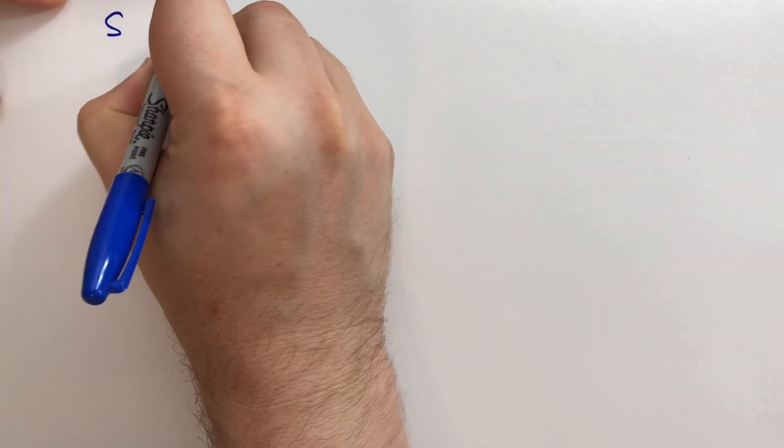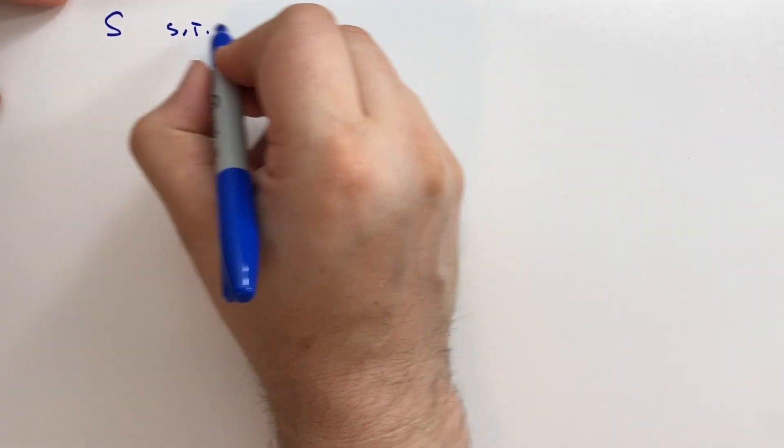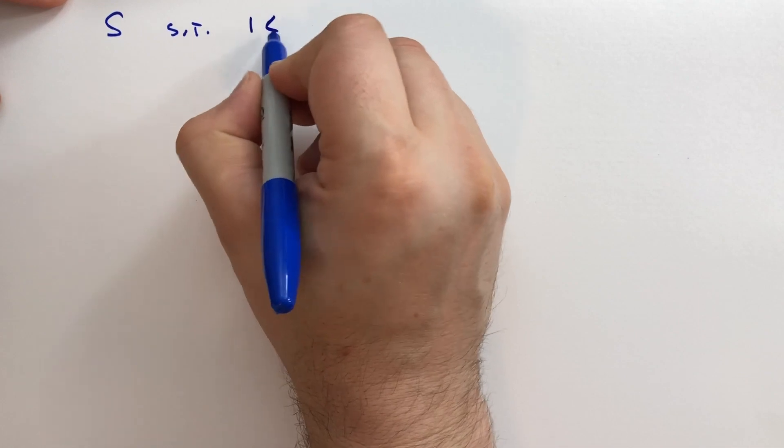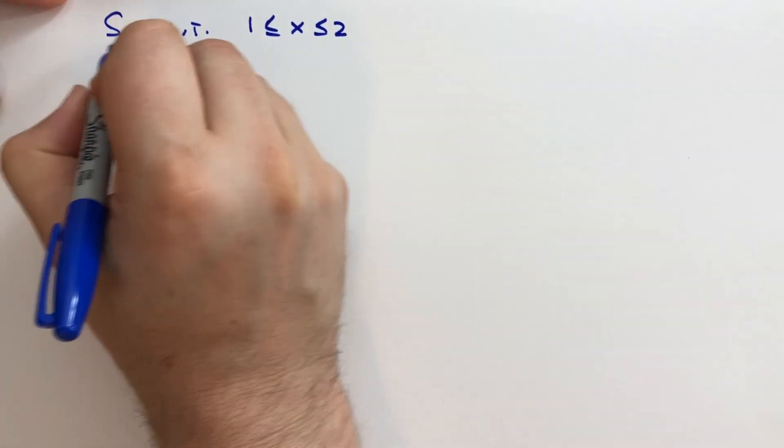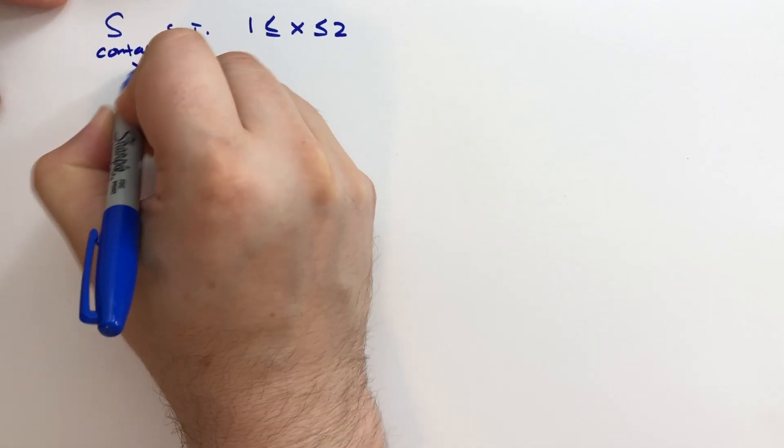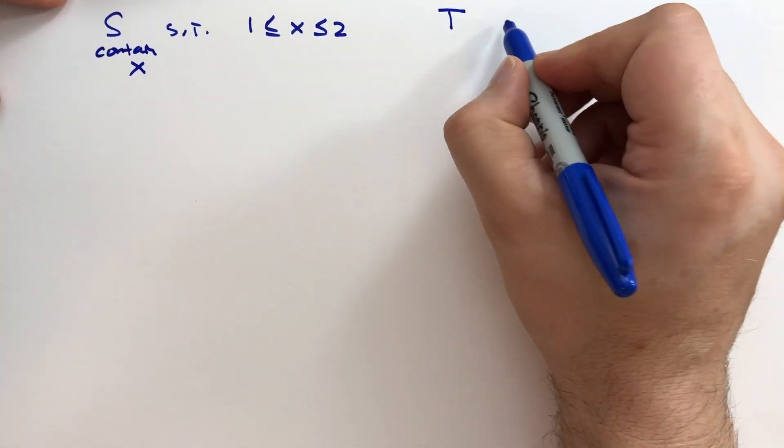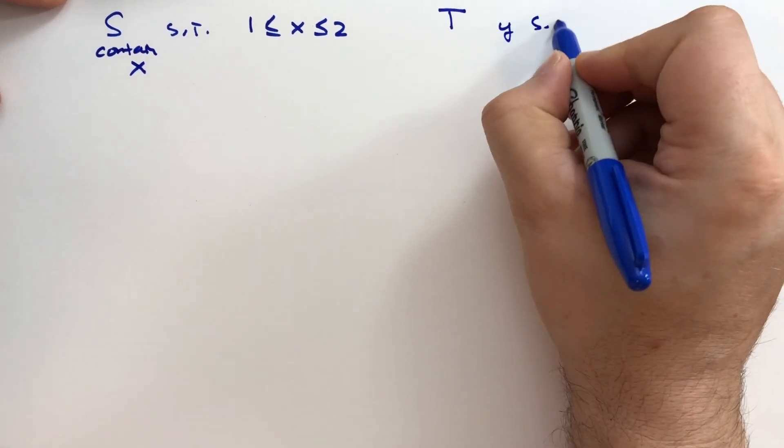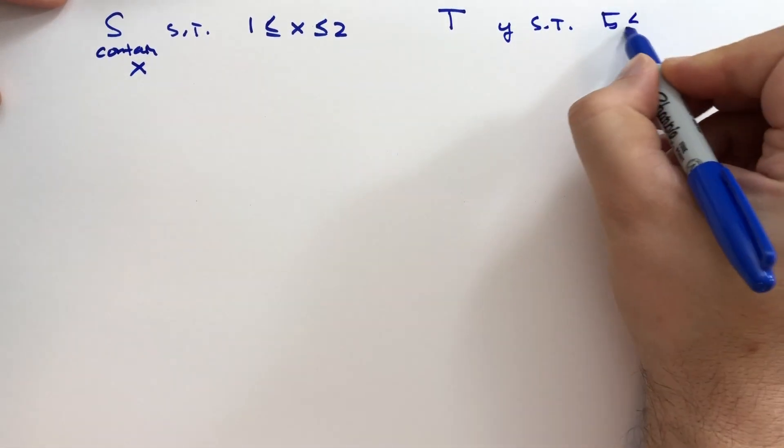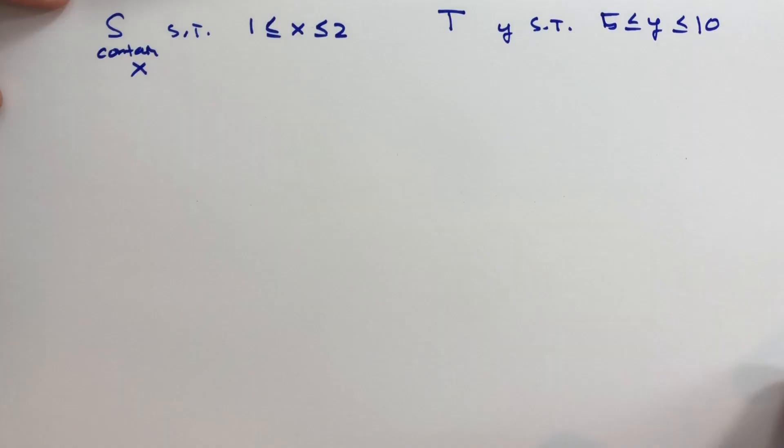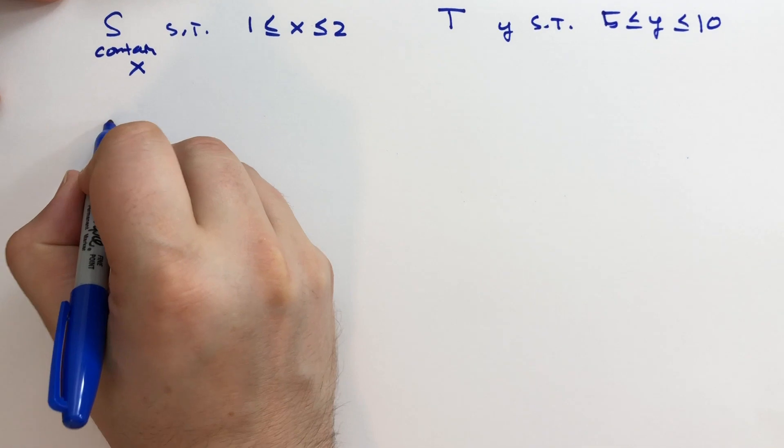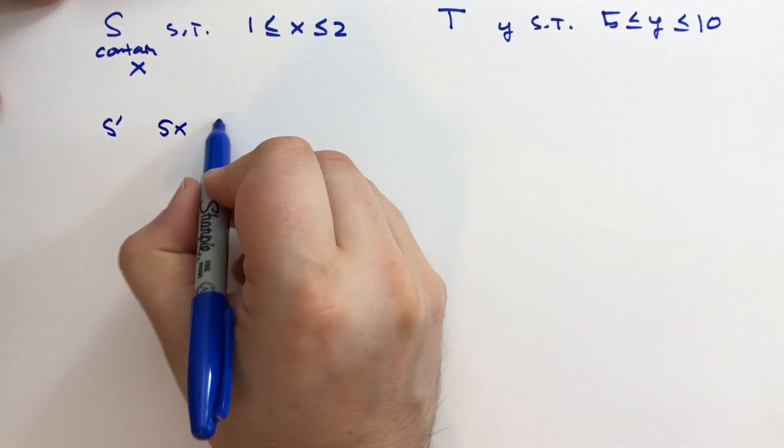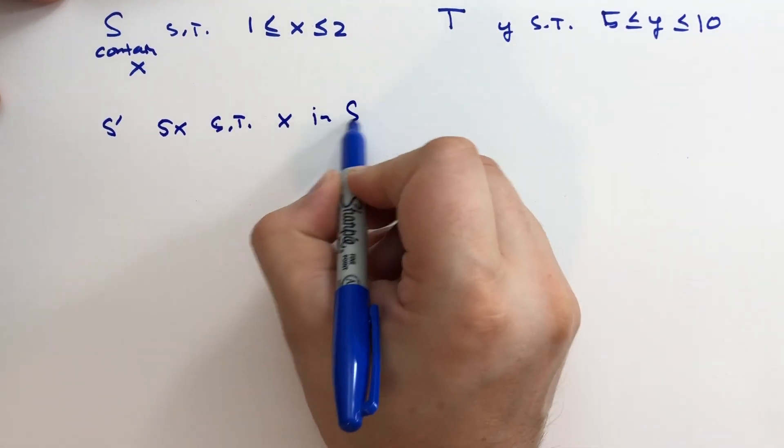Moving right along, sometimes we want to prove that two sets are equal. And to do so, we have to prove that the sets are subsets of each other. For instance, let's take the set S such that S contains X, such that 1 is less than or equal to X is less than or equal to 2. So S contains elements X, such that 1 is less than. And we have a set over here, T, that contains Y, such that 5 is less than or equal to Y is less than or equal to 10. And we want to prove, so we're going to make an S prime set. This contains all 5X, such that X is in S, right? So X is going to follow the same conditions for S.